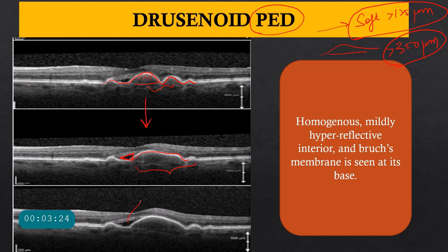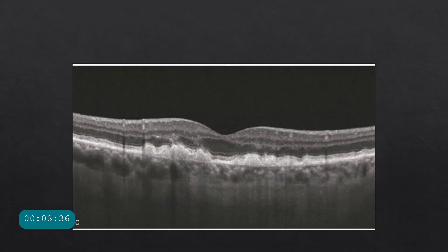Pigment epithelial detachments are very important because they may be associated with a choroidal neovascular membrane and can progress to wet ARMD, so close follow-up is essential. Here you can see another pigment epithelial detachment with hyperreflective material present — this is a drusenoid PED.